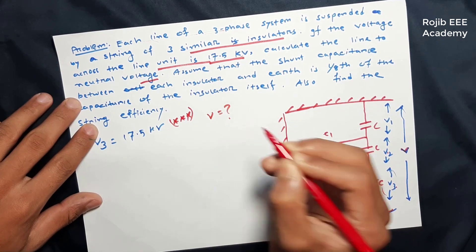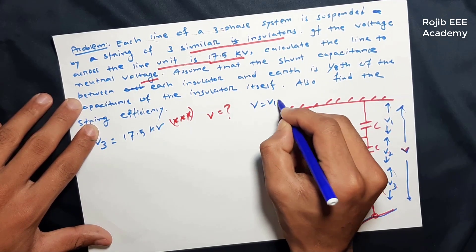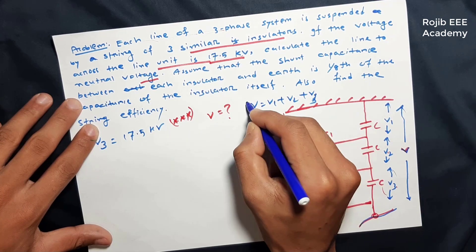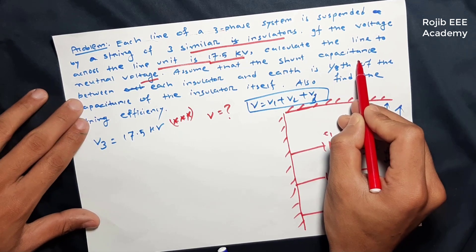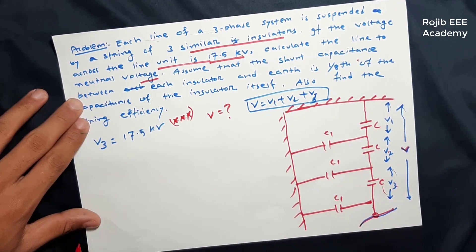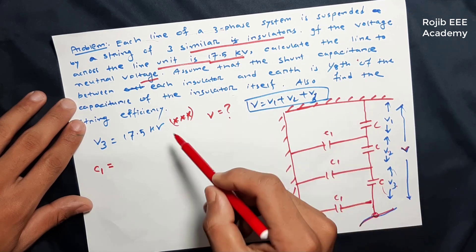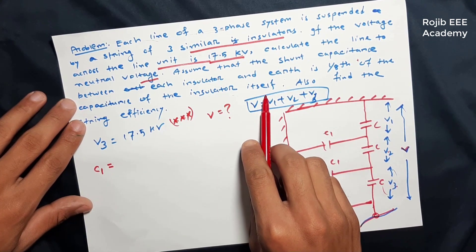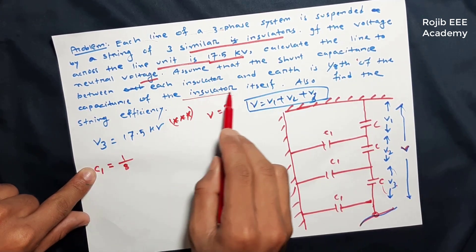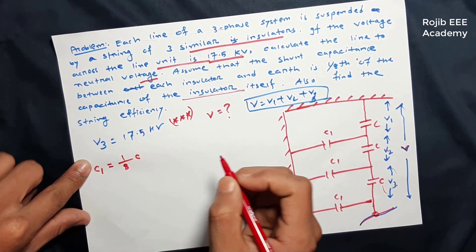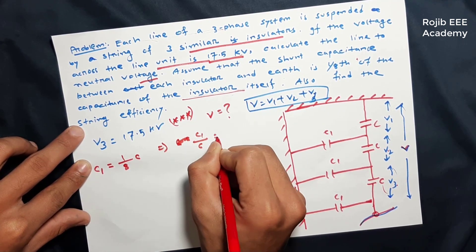The total voltage V is equal to V1 plus V2 plus V3. Assume that the shunt capacitance between each insulator, C1, is equal to one-eighth of the capacitance of the insulator itself. That means C1 equals (1/8) of C, so C1 divided by C equals 1 by 8.